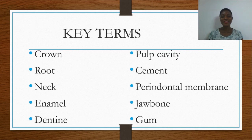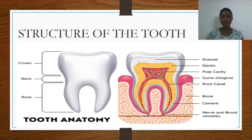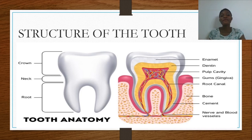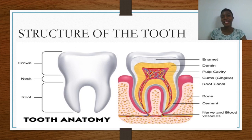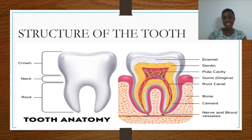Looking at the structure of the tooth, at the very surface you see a whitish substance known as the enamel. This is the first layer you encounter when looking at the structure of someone's tooth. In a typical mammal's tooth, the enamel is considered to be the hardest part of the mammal.